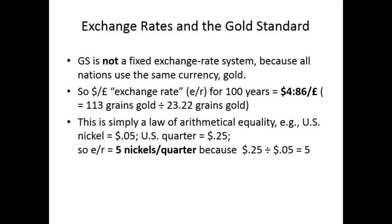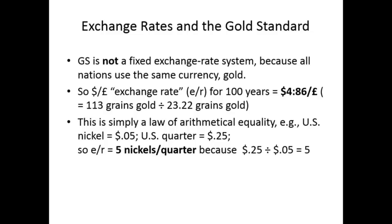So gold is not a fixed exchange rate system — it's simply the law of arithmetic. If the dollar-pound exchange rate for a hundred years was $4.86 plus or minus one percent, it was because 113 grains of gold — the definition of the pound — contained approximately five times the amount of gold as the dollar, defined as 23.22 grains. We don't say there are fixed exchange rates between nickels and quarters in the U.S. monetary system. A nickel is defined as one-twentieth of a dollar; a quarter as one-quarter. Therefore five nickels equal a quarter — that's an arithmetical equality, not a fixed exchange rate.